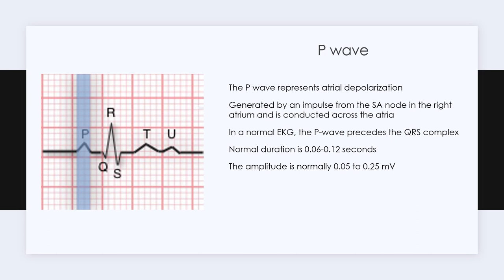Let's go through them one by one. The P wave represents atrial depolarization — when the electrical impulse starts in the SA node in the right atrium and is conducted across the atria. In a normal ECG, a P wave always precedes a QRS complex. A normal P wave duration is 0.06 to 0.12 seconds, and the amplitude is normally 0.05 to 0.25 millivolts.